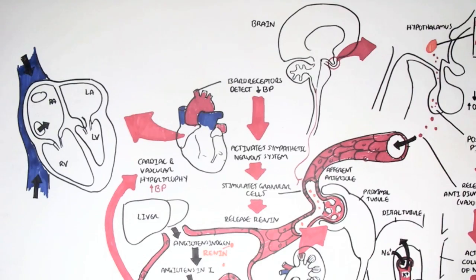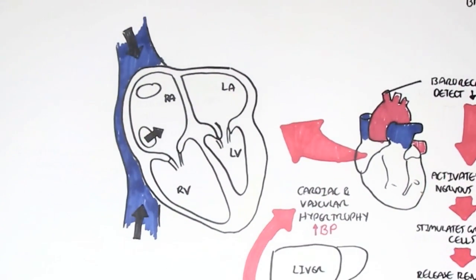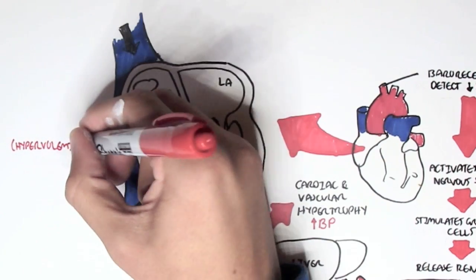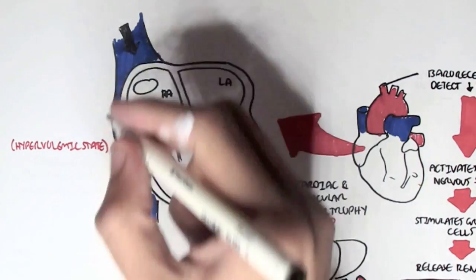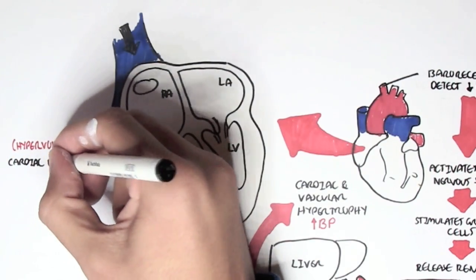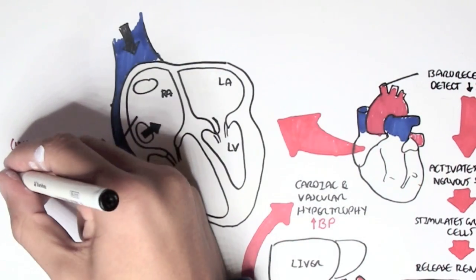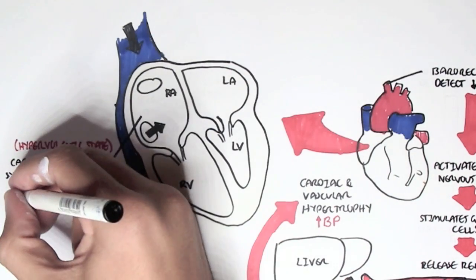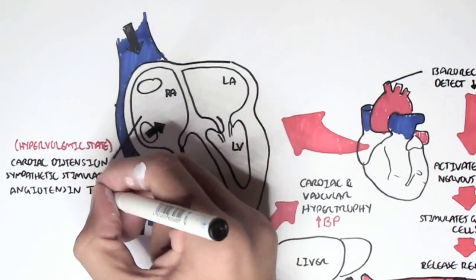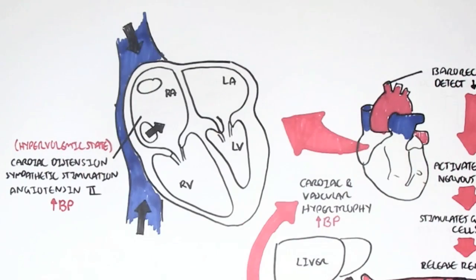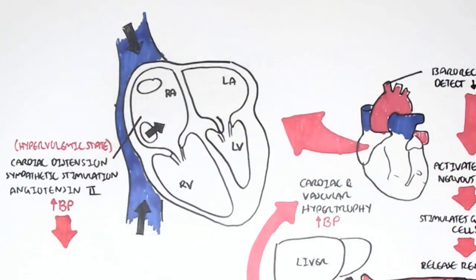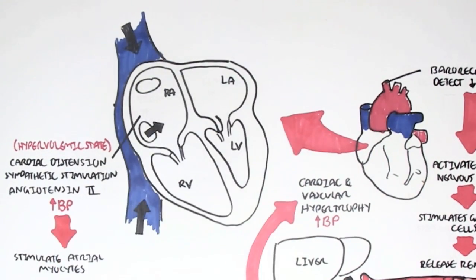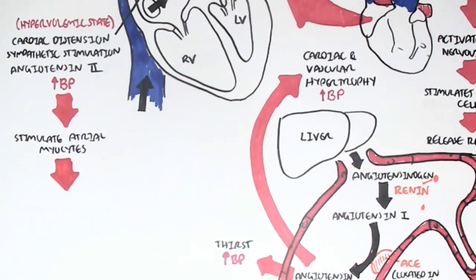If we have a hypervolemic state — meaning we have hypertension — several things can happen. First, cardiac distension can occur, meaning stretching of the right atrium. There can also be sympathetic stimulation, or detection of high levels of angiotensin II. Essentially, all of this signals high blood pressure, and in response, cardiac distension stimulates the atrial myocytes to secrete atrial natriuretic peptide.